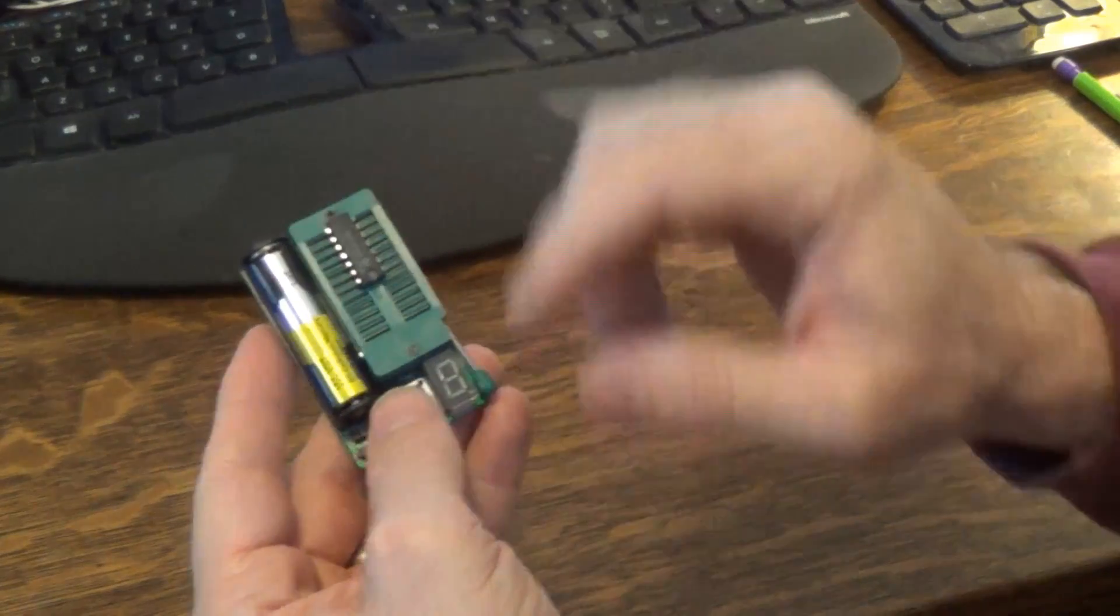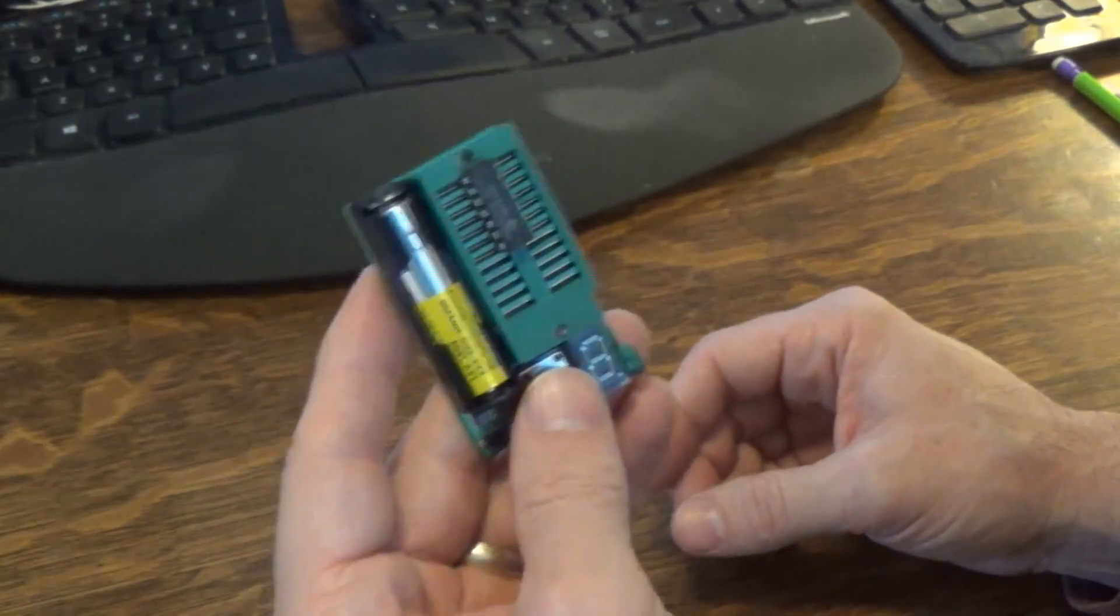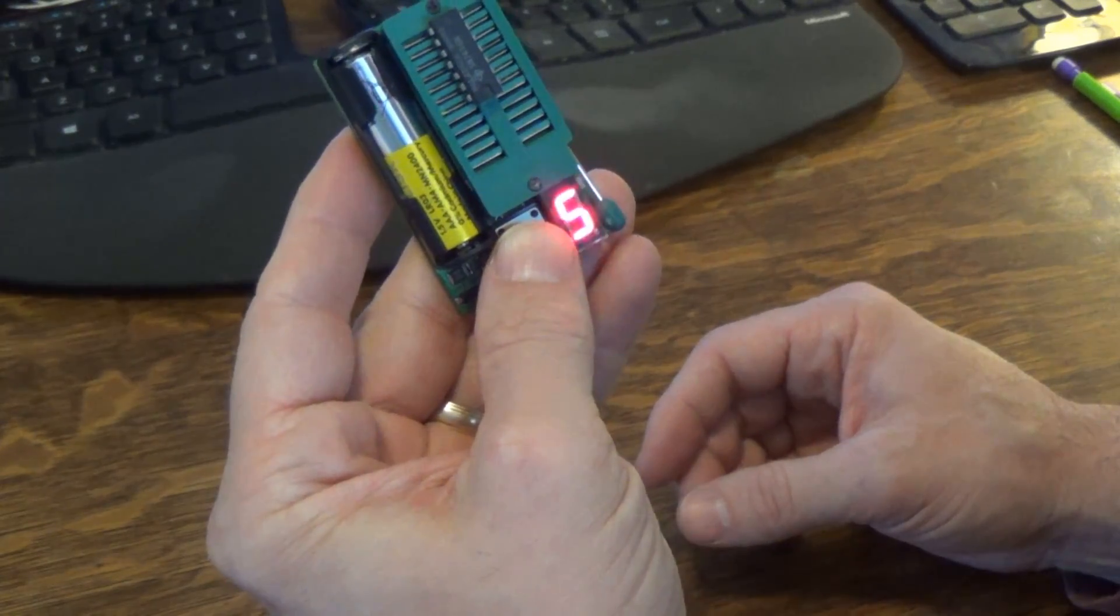But so if you get a different number, if you don't get an error and you get a different number, maybe check the data sheets out. So it seems like it works okay.